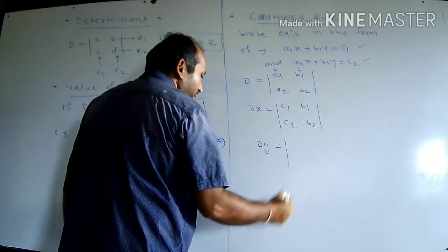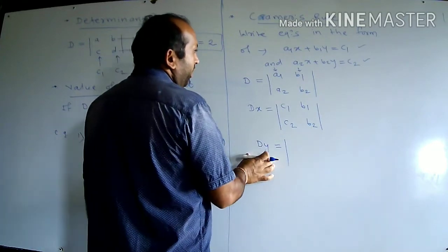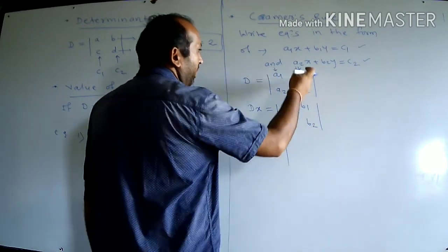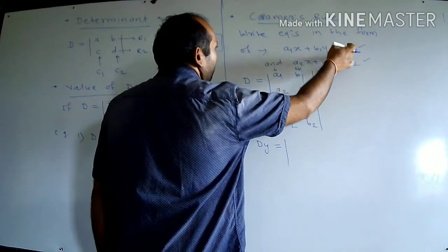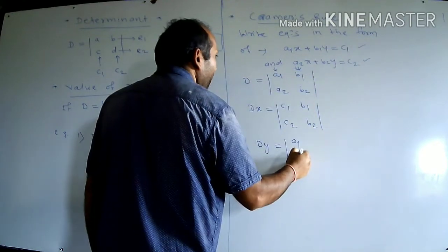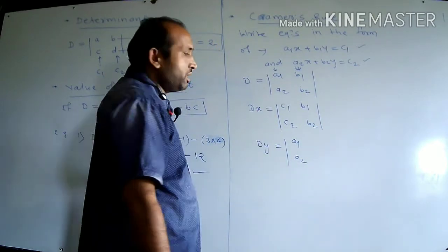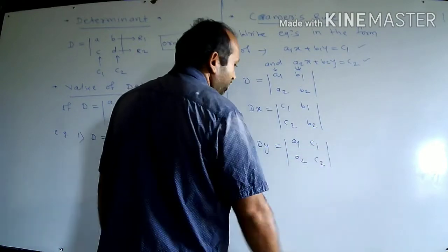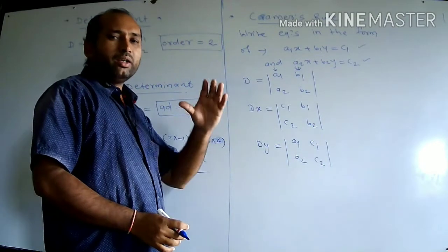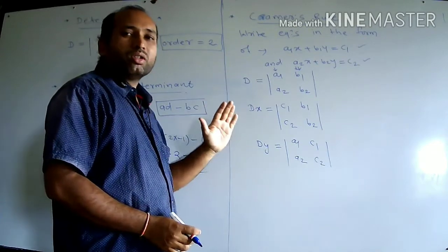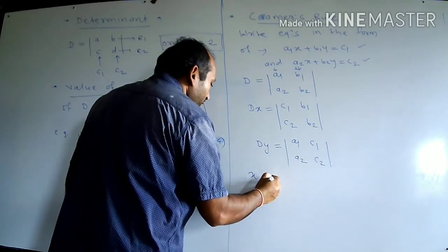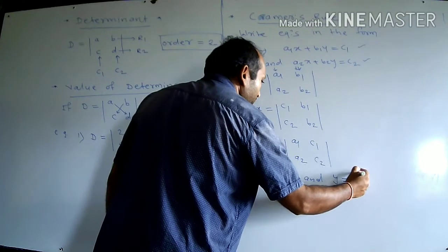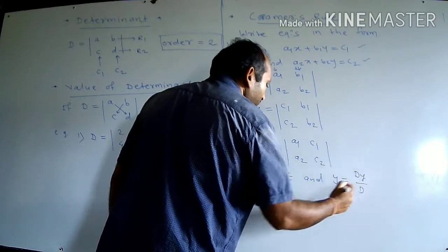The next determinant is DY. In DY, replace only the second column by the constants C1, C2 — that means replace the coefficients of Y — while the first column A1, A2 remains as it is. Finally, by Cramer's Rule: X equals DX upon D, and Y equals DY upon D.